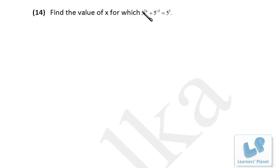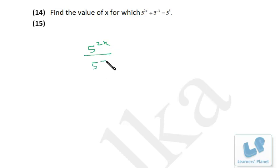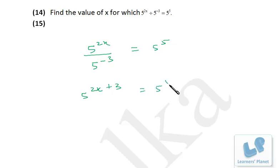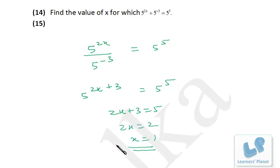Now it's 5 raised to 2x divided by 5 raised to minus 3, equals 5 raised to 5. So we have to find the value of x. It's 5 raised to 2x minus minus 3, if the minus 3 goes up it will be plus 3, so 5 raised to 2x plus 3 equals 5 raised to 5. Base is same, so power is same: 2x plus 3 equals 5, giving 2x equals 2, so x equals 1.